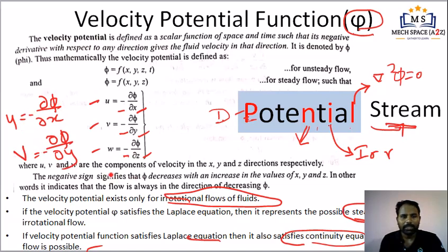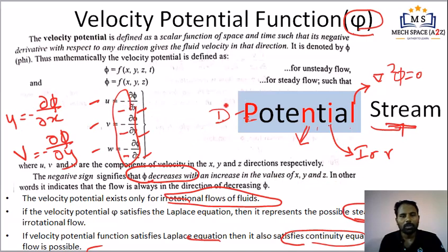If you denote the negative sign, phi decreases with increase in x, y, z — that is the negative sign. In the book, the opposite case is also presented. Three past two is also the opposite case.